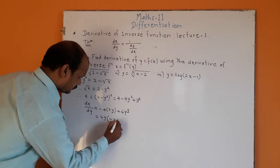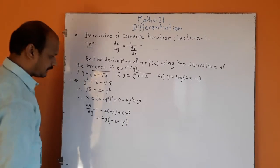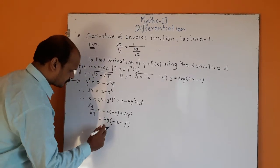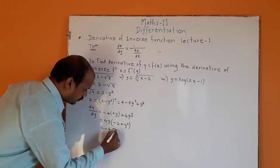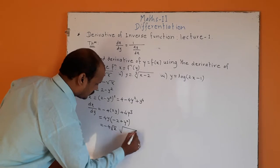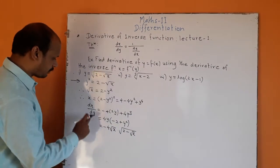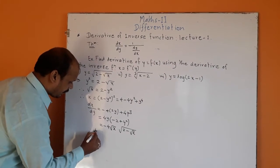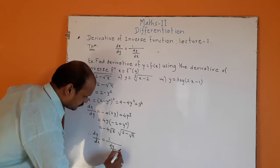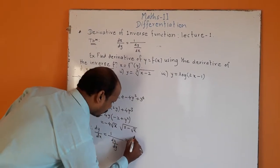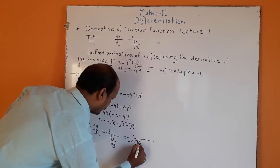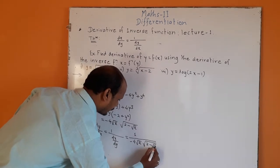So dx/dy = −4y(2 − y²), and since 2 − y² = √x, this becomes dx/dy = −4√x · y = −4√x · √(2 − √x). Therefore, by the inverse function theorem, dy/dx = 1 / (dx/dy) = 1 / (−4√x · √(2 − √x)). This is the required answer for the first example.